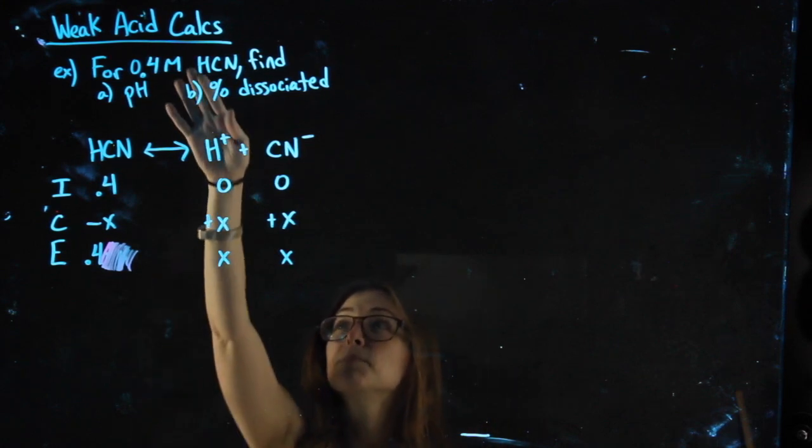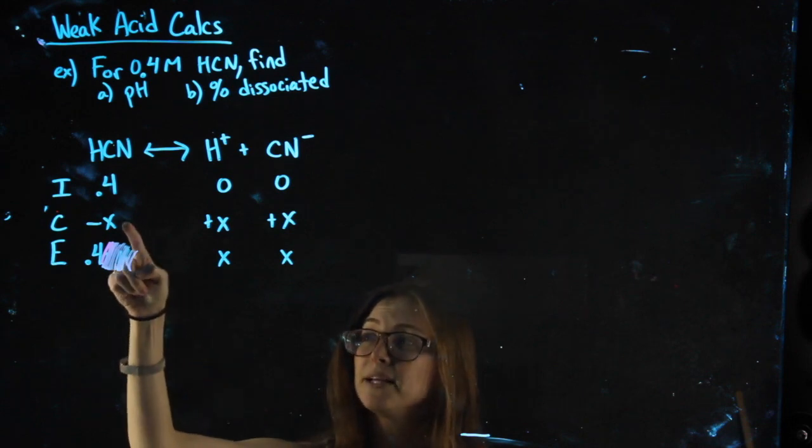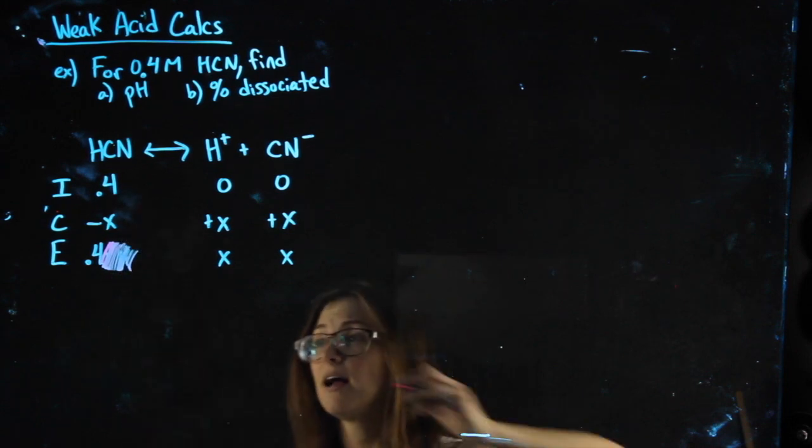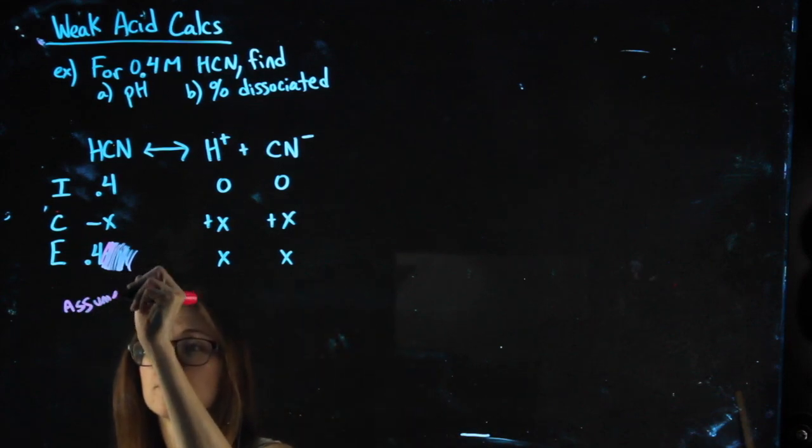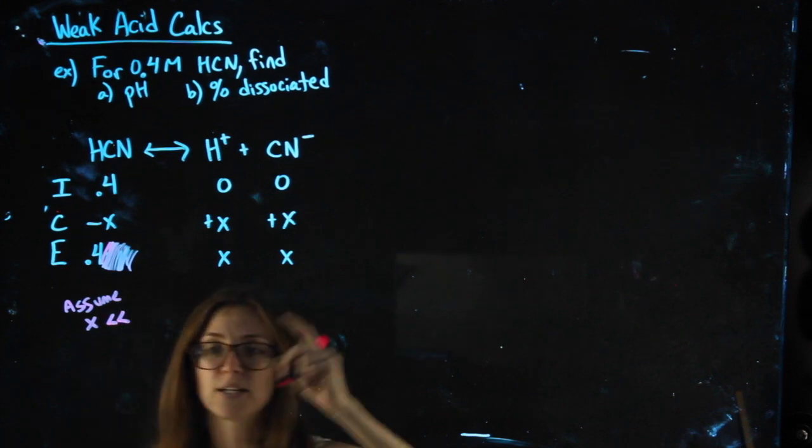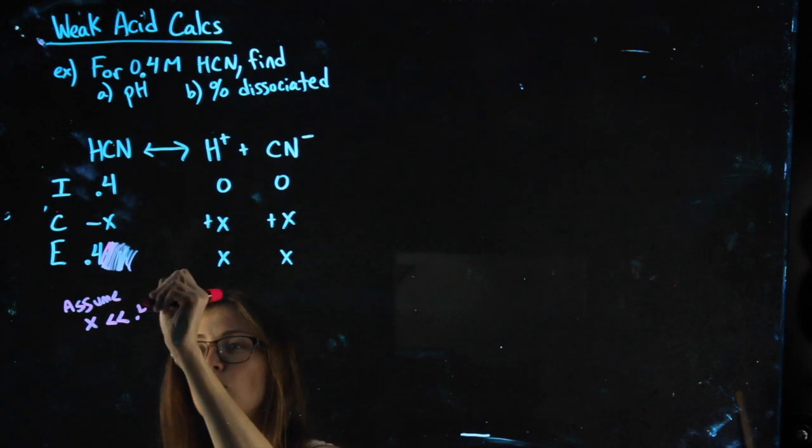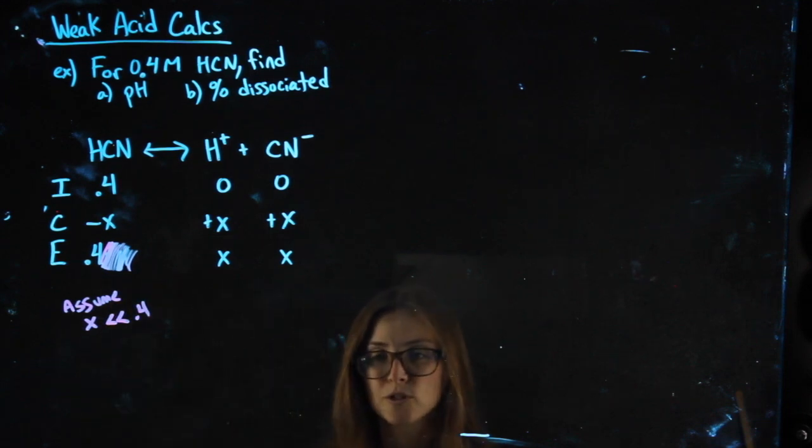Now, why? Remember, it's barely dissociating. It's a weak acid. Barely dissociating. That means that X is probably tiny compared to 0.4. X is probably so small, we are assuming that X is way less than, that's what a double less than sign means, it's insignificant. Way less than 0.4. So, we're saying that 0.4 minus X still just equals 0.4.